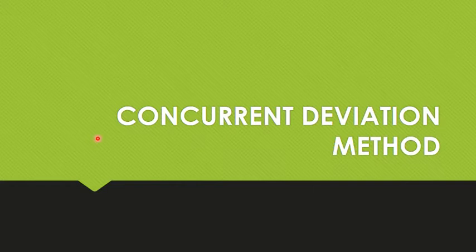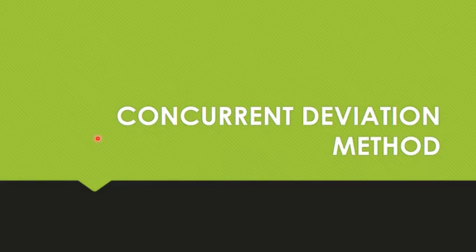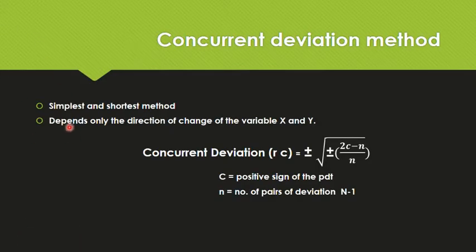The other method is called the Concurrent Deviation Method. This is the 4th method — the Coefficient of Concurrent Deviation, or Concurrent Deviation Method, for calculating the Correlation Coefficient. Concurrent Deviation Method is the simplest and shortest method for the calculation of the Correlation Coefficient.